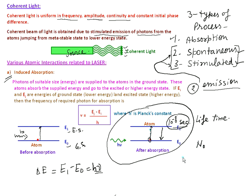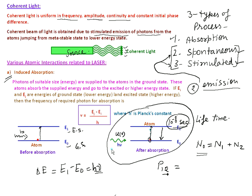When you explain the laser, you consider an assembly of atoms — there are a large number of atoms. Suppose there are N-naught atoms total, N1 atoms in the ground state, and N2 atoms in the excited state, where N1 plus N2 equals N-naught. To find the transition probability P12 — meaning the probability that an atom in state 1 absorbs energy and goes into state 2 — this is defined by two factors.